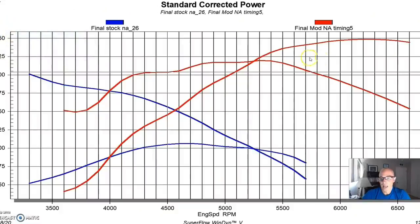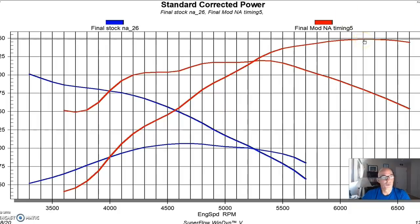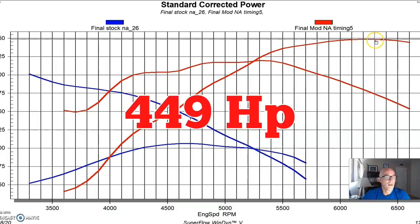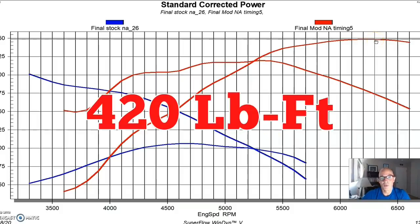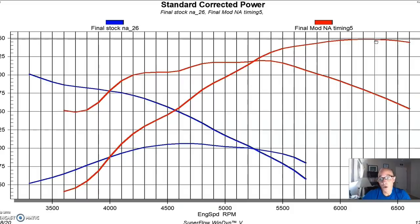So here's what happened after we installed the new heads, cam, and intake. The power output jumped dramatically up to 449 horsepower, so we increased the power output of our NA combination by almost 50% going from near 300 horsepower to near 450 horsepower. So it was a pretty big jump in power, but as you can see, it wasn't without a trade-off.